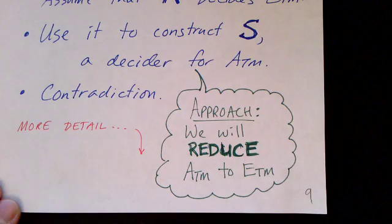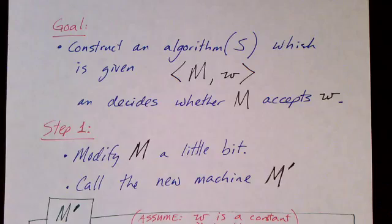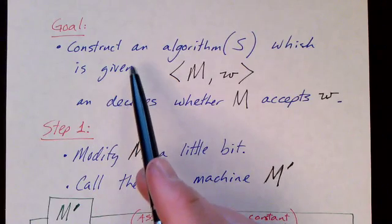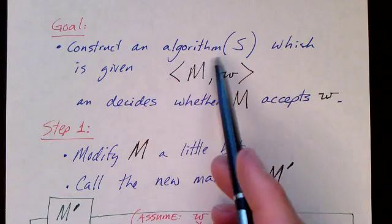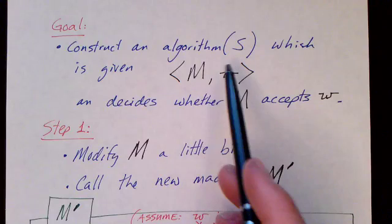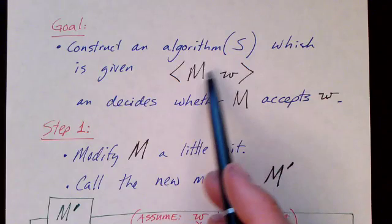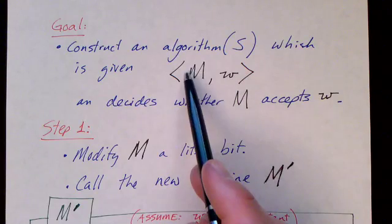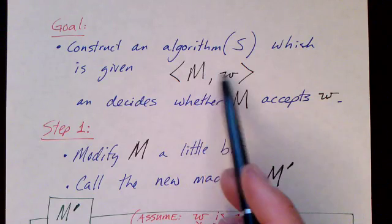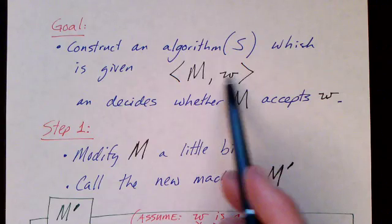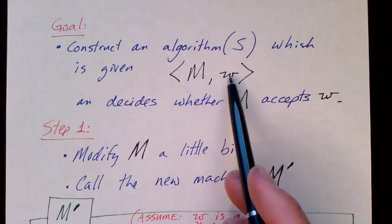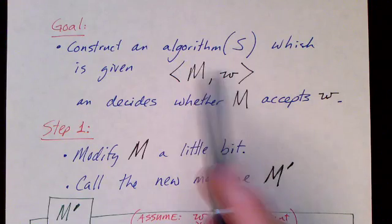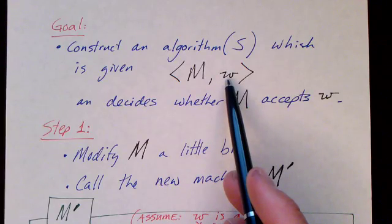Now let's look at the whole proof in more detail. It's easy to get lost in this, but remember what we're doing: we're trying to give an algorithm — construct an algorithm — which will decide the acceptance problem for Turing machines. This algorithm takes as input a string encoding a Turing machine and an input to that Turing machine. If that Turing machine, when run on that string W, would halt and accept, then our algorithm must also accept; otherwise it must reject.